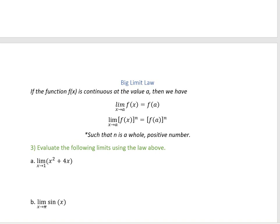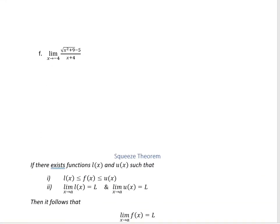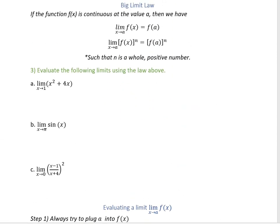A big limit law we have is that if you know a function is continuous around a value a, then you can just take x approaching a and plug it straight into your function. You can also apply the same thing if you're raising your function to a power, as long as that power is a whole positive number. If n is not a whole positive number — if it's a fraction or a negative — you might end up taking the square root of a negative or dividing by zero.